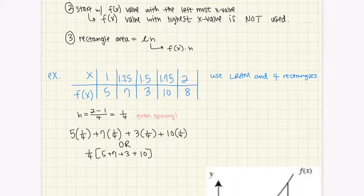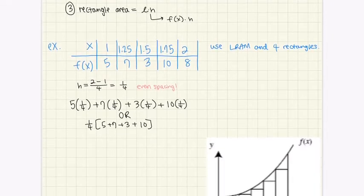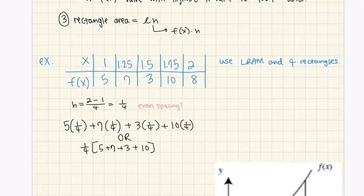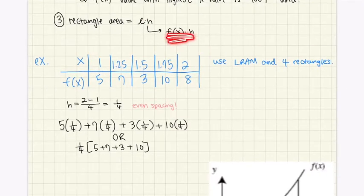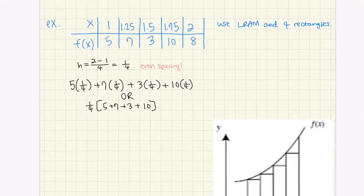The second step is to start with the f(x) value at the leftmost x value — the lowest x value. The f(x) value at the highest x value is not going to be used. The third step is to use the rectangle area formula, which is length times height. The height here is the width, notated as h, and f(x) is the length.